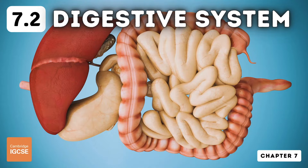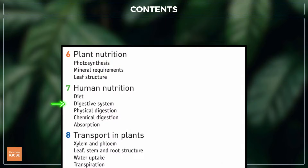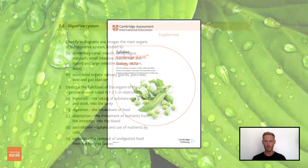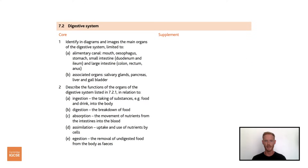Hello and welcome to another complete Cambridge IGCSE biology lesson, where you'll learn absolutely everything you need to know on topic 7.2, digestive system. As always, we'll be following the Cambridge syllabus exactly, and we'll cover absolutely everything you need to know for your final exam.